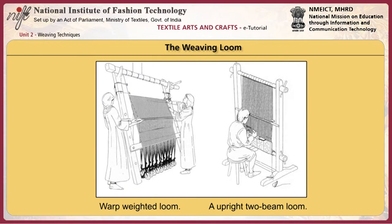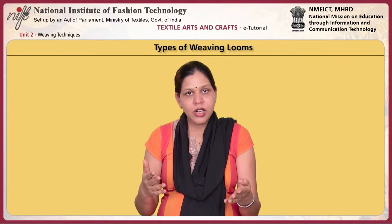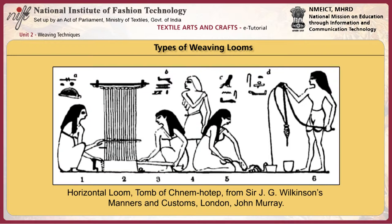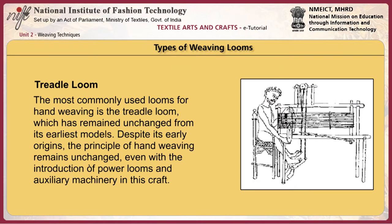The weaving loom is a frame which is used to hold the vertical set of threads, namely warp, taut and parallel while the weft is inserted backwards and forwards between the warp threads. There are three important types of looms: the back strap loom, the horizontal loom and the treadle loom. The simplest looms are the back strap or body tension looms. Early weaving was also done on vertical looms with a warp suspended from an upper bar weighted at the bottom. Another type is the horizontal loom, which has been the most highly developed in the course of human history. The most commonly used loom for hand weaving is the treadle loom, which has remained unchanged from its earliest models. Despite its early origins, the principle of hand weaving remains unchanged even with the introduction of power looms and auxiliary machinery.